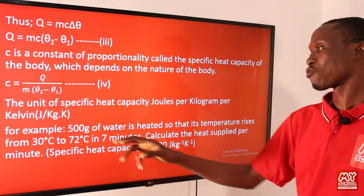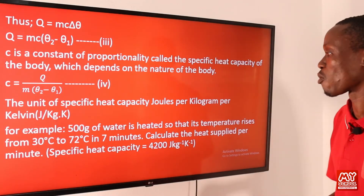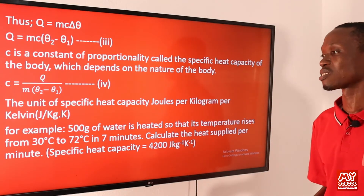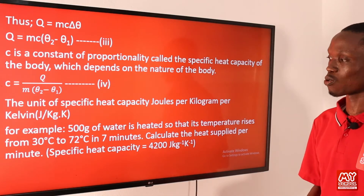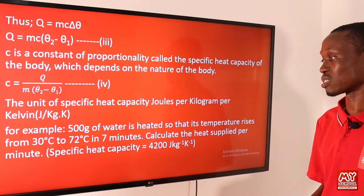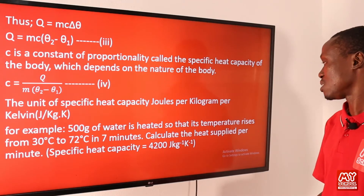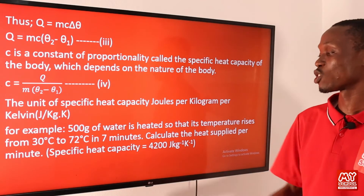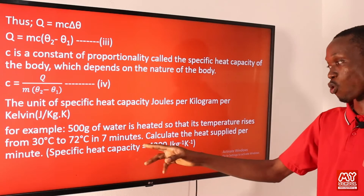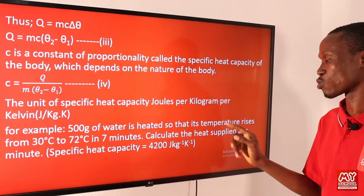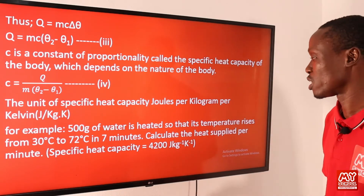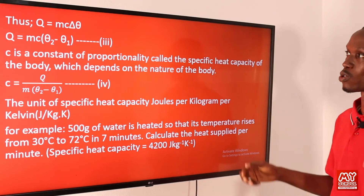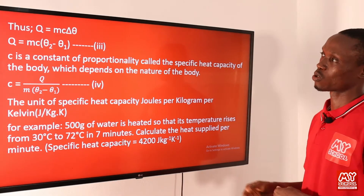For example: 500 grams of water is heated so that its temperature rises from 30 degrees Celsius to 72 degrees Celsius in seven minutes. Calculate the heat supplied per minute. The specific heat capacity of water is given as 4200 joules per kilogram per kelvin.